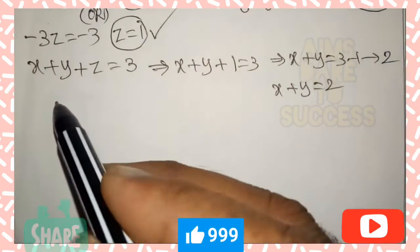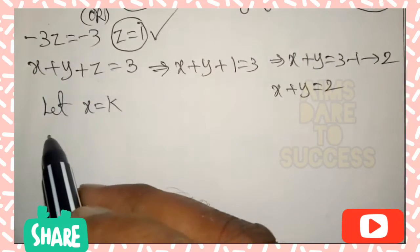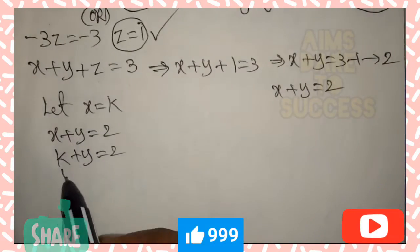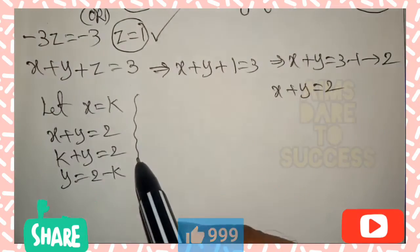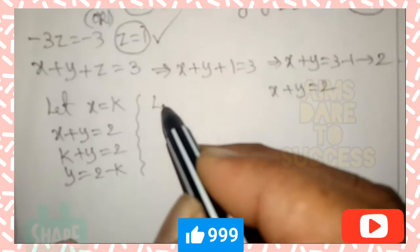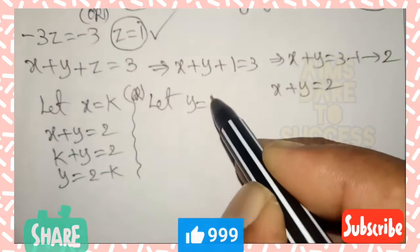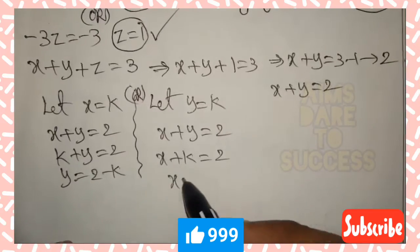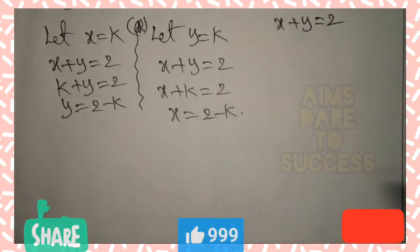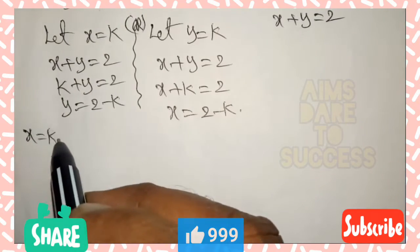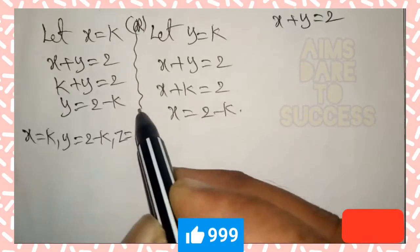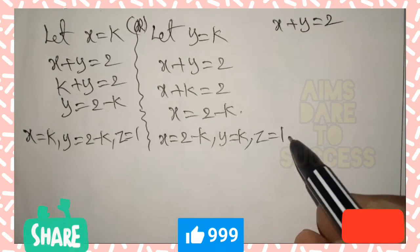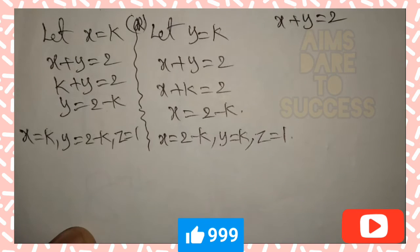Since x + y = 2 has infinitely many solutions, we introduce a parameter. Let y = k. Substituting into x + y = 2 gives x + k = 2, so x = 2 - k. The final solution is: x = 2 - k, y = k, z = 1 (considering y = k). These are the required answers.